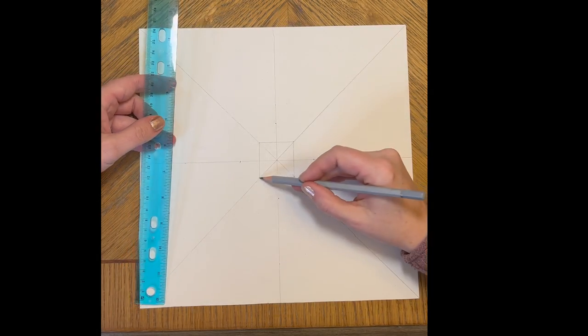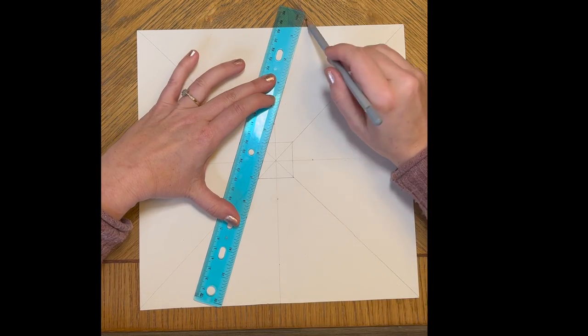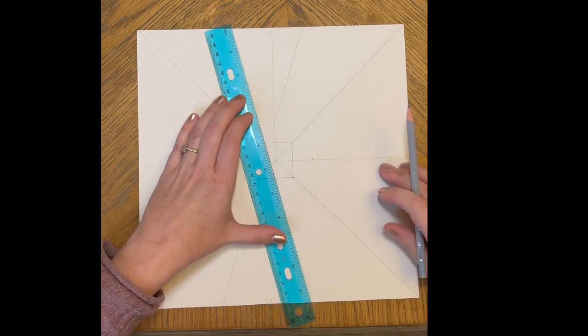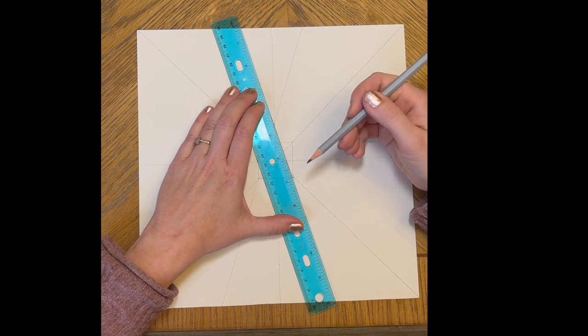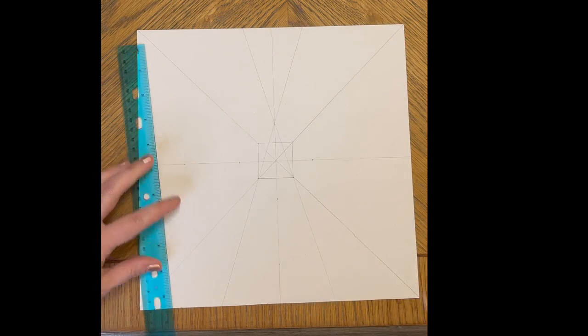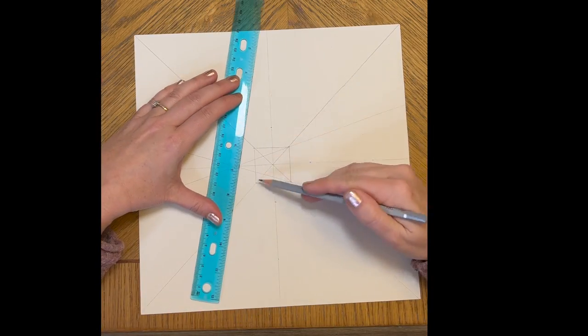Now we could make a line from one of those dots to the bottom corner of the square and then again to the other bottom corner of the square from that same dot. Just rotate the paper and go around and do that on every one of those.